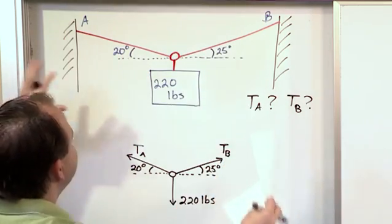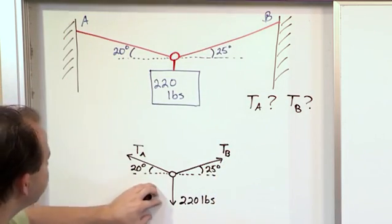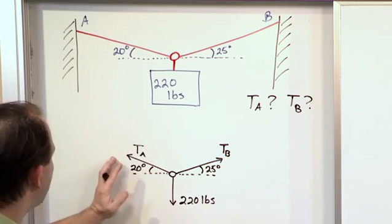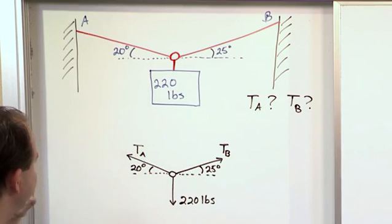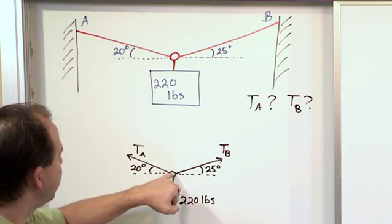Notice how you've eliminated all the extra clutter of this picture and you're focusing on what's important. You don't need to draw the walls here. There's no wall over here. And basically it's just zooming in on the situation. We have a ring here.